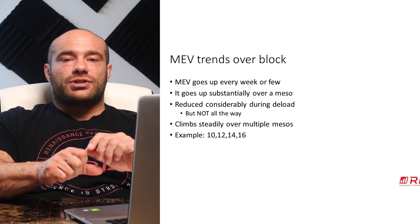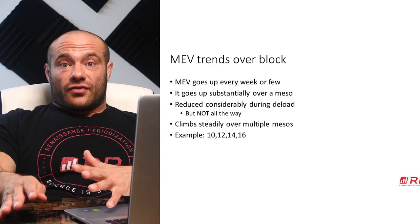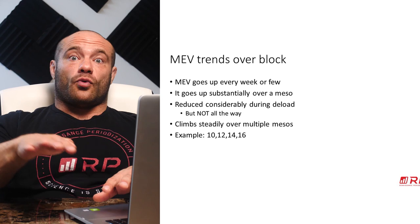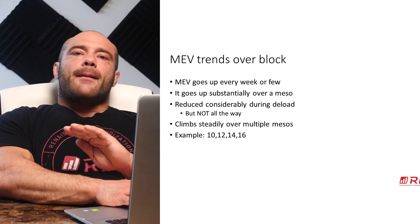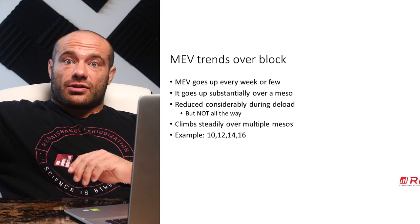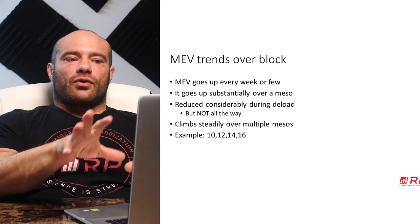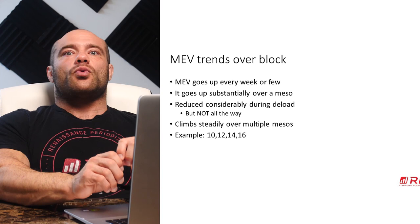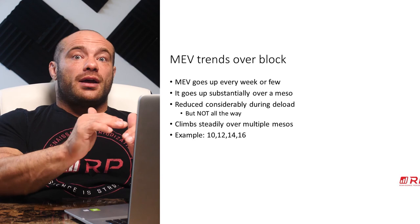So how does this apply to volume in hypertrophy training? Minimum effective volume goes up every week or every few weeks. As you expose the body to more stimulus, it gets more resistant to that stimulus and you need more and more to keep making even minimum gains. Over a mesocycle it goes up substantially, but it is reduced considerably during a deload — though not reduced completely. So over multiple mesocycles of accumulation and deload, the MEV can actually start to trend upward for a distinct group of exercises in a distinct rep range — for example, squats in the 5–10 range.